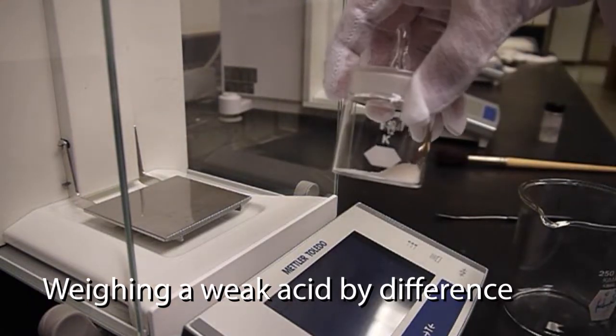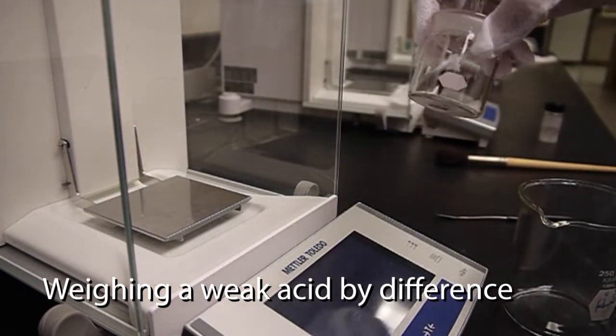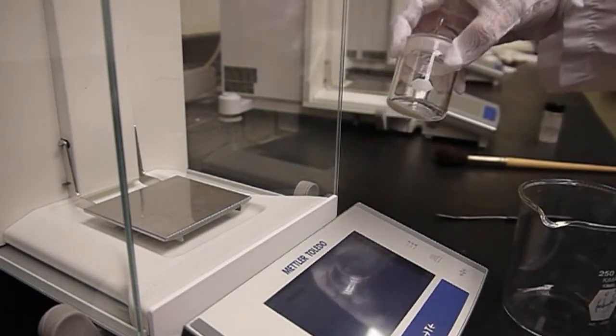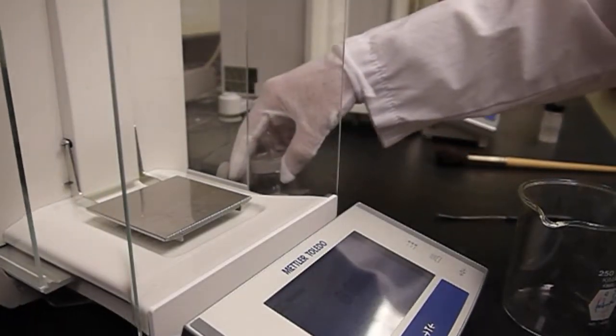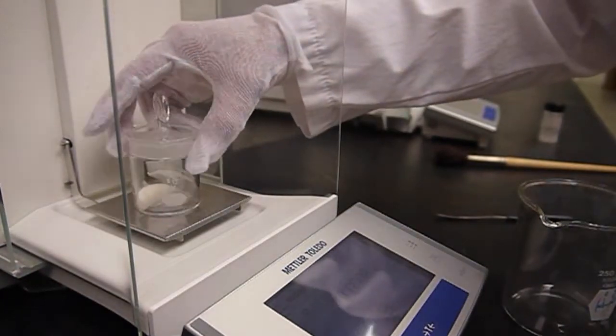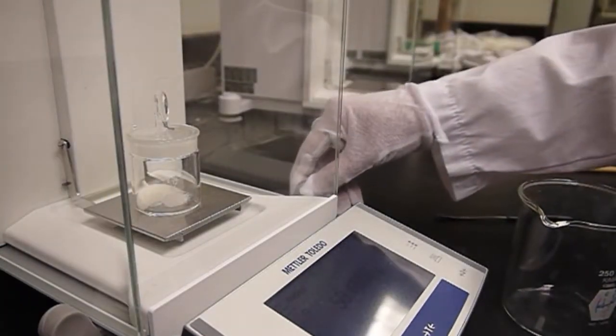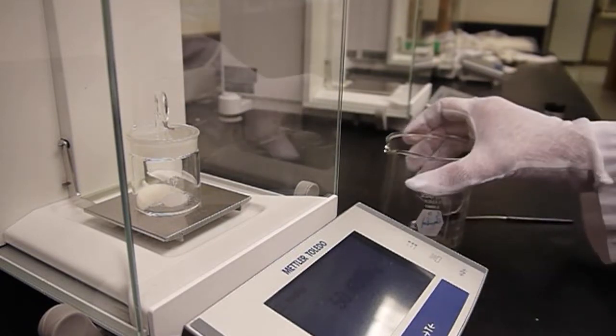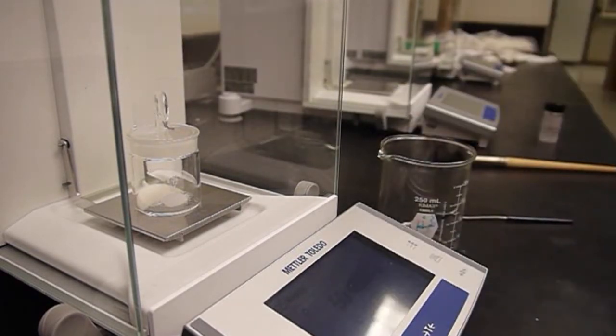I've taken my dried weak acid out of the oven. It's cooled in the desiccator. This is tartaric acid. Now I'm going to weigh by difference and try to get around 0.1 grams of tartaric acid into my beaker, which is where I'm going to perform the titration.